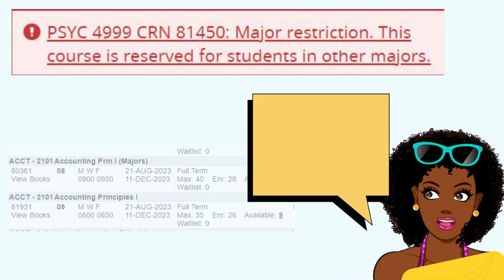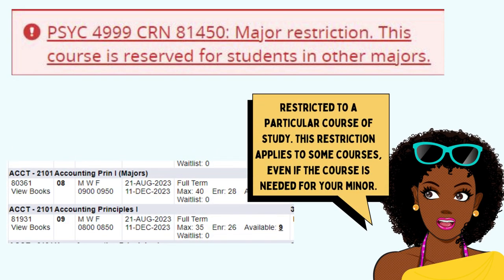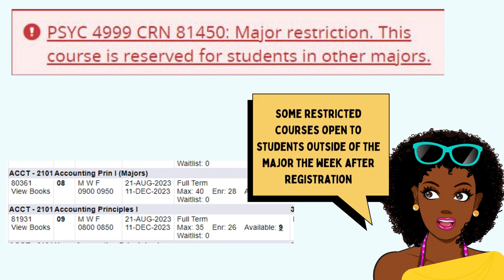This error means that the course you've selected is restricted to a particular course of study. This restriction applies to some courses even if the course is needed for your minor. Some restricted courses open to students outside of the major the week after registration; others are always restricted.